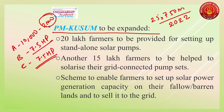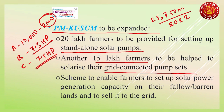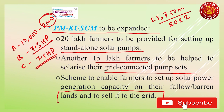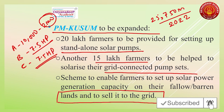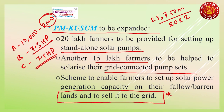20 lakh farmers will be provided for setting up standalone solar pumps, and another 15 lakh farmers will be helped to solarize their grid-connected pump sets. The scheme will enable farmers to set up solar power generation capacity on their fallow or barren land and sell surplus electricity to the grid — this is an important point in PM KUSUM scheme.